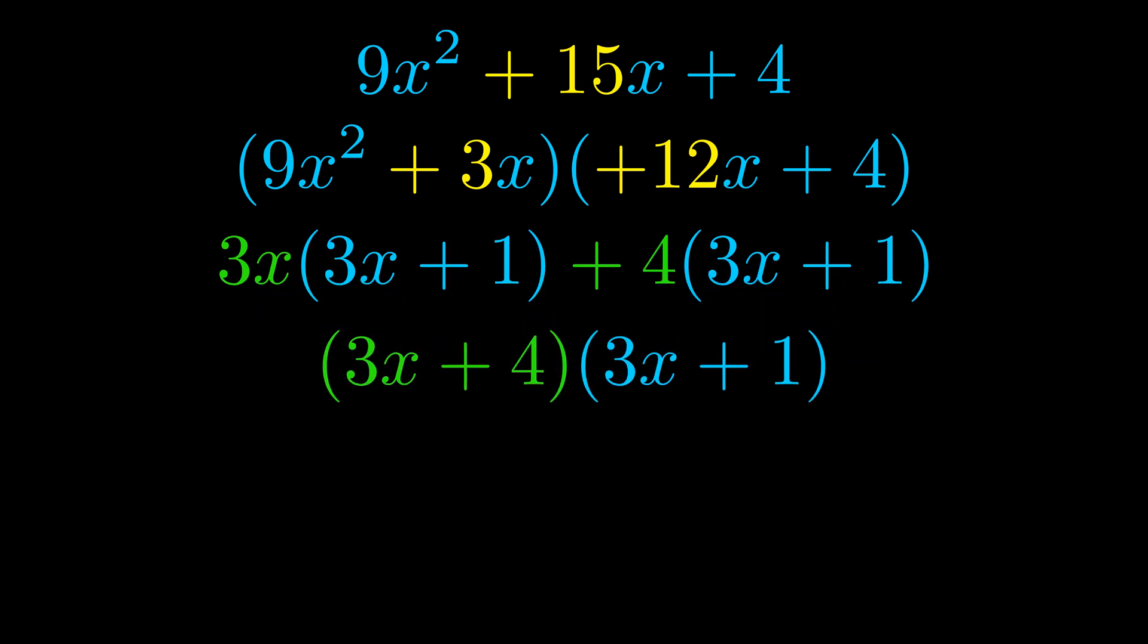Notice also how what remains inside of the parentheses is the same in both cases. The blue values are the same. Those blue values will become one of our factors and we will combine the two green values, the GCFs that we pulled out, to get the other one. And that is our fully factored equation.